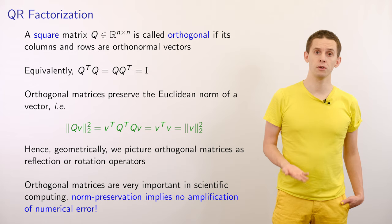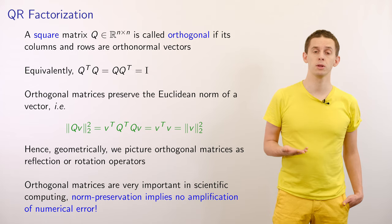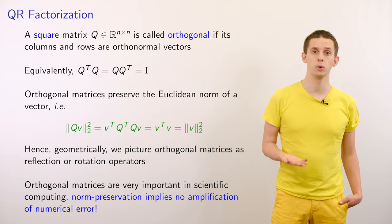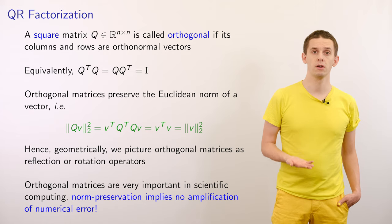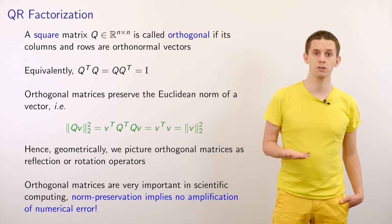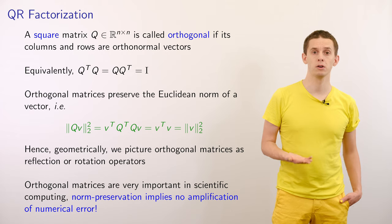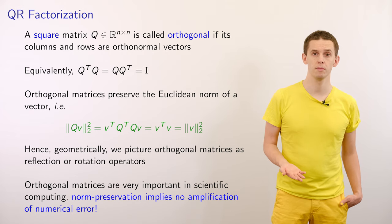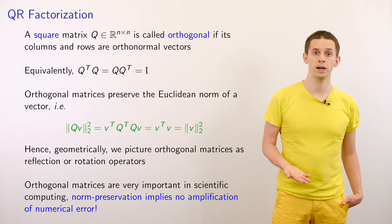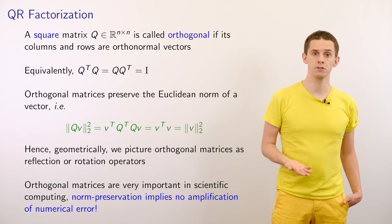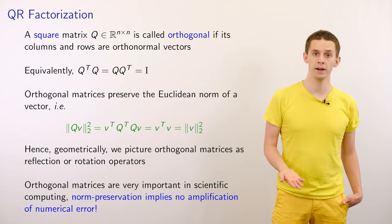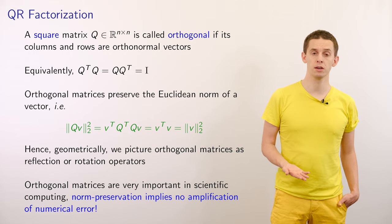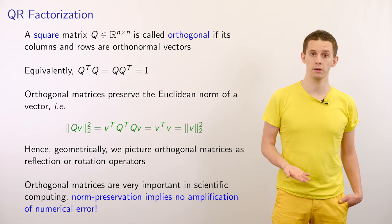A nice feature of orthogonal matrices is that they preserve the Euclidean norm when applied to vectors. Let's look at a vector V and the Euclidean norm squared of Q times V. We can write that out as V transpose Q transpose QV. Since Q transpose Q will vanish and become the identity, we'll just get V transpose V, and therefore this gives us the Euclidean norm squared of V.